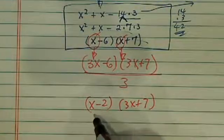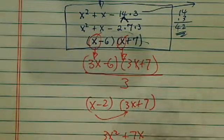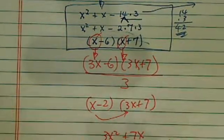Let's check to make sure we got the answer back. So I have 3x squared, plus 7x. I'm going to have minus 6x and minus 14. That's exactly what we started with.